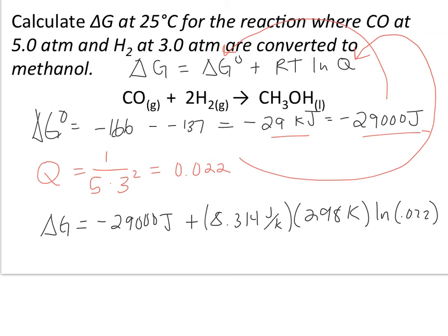Now substitute everything in and solve. I took out the per mole on the R value because this value for the standard free energy change is for one round of the reaction, where one mole of carbon monoxide produces one mole of the methanol. This gives me an answer of negative 38,000 joules for one round of this reaction, where one mole of carbon monoxide makes one mole of methanol.